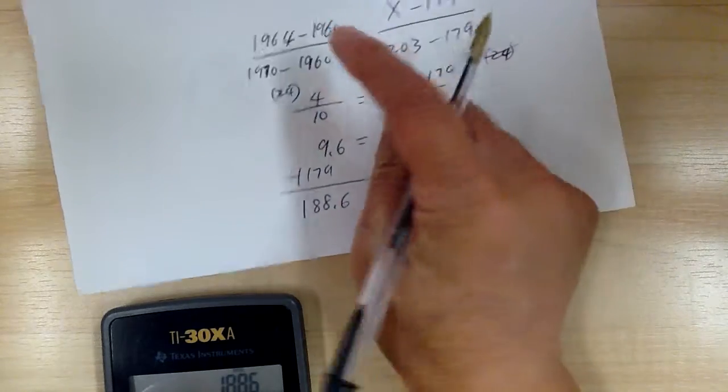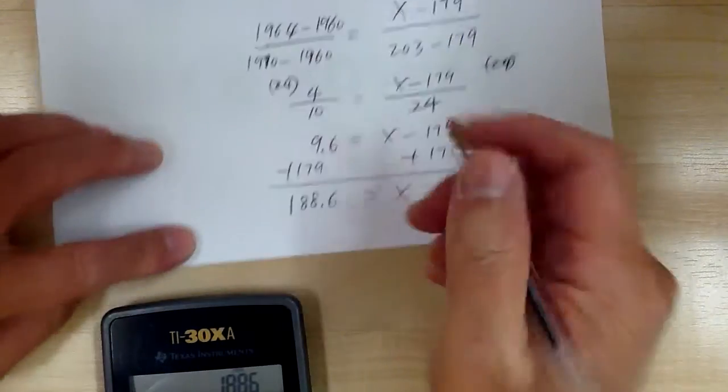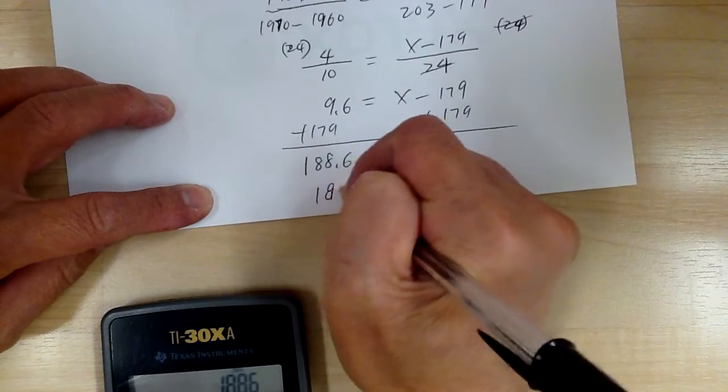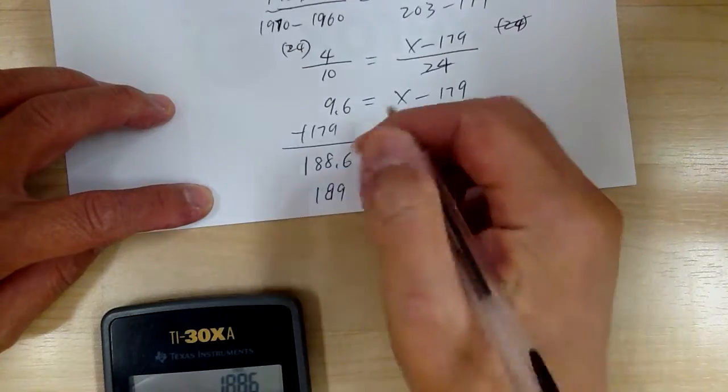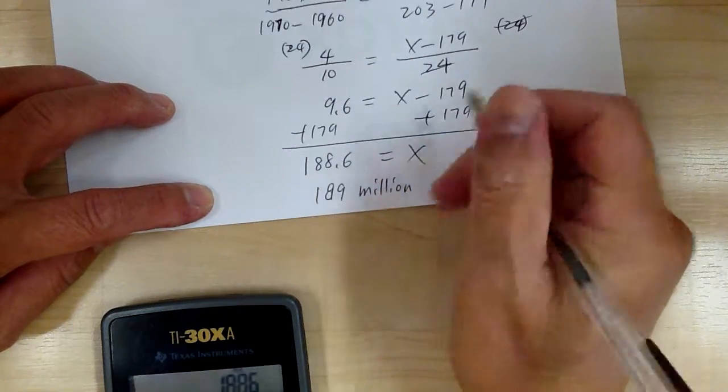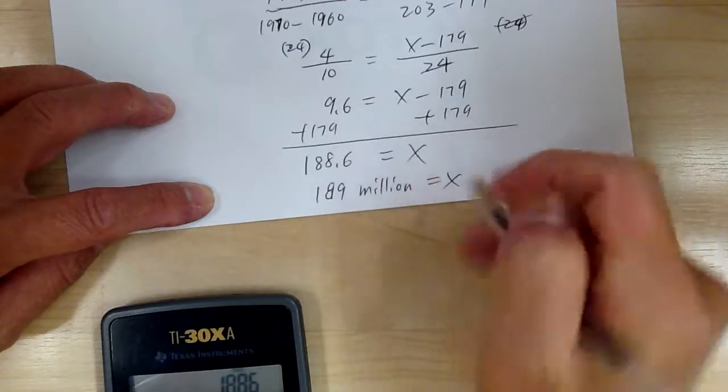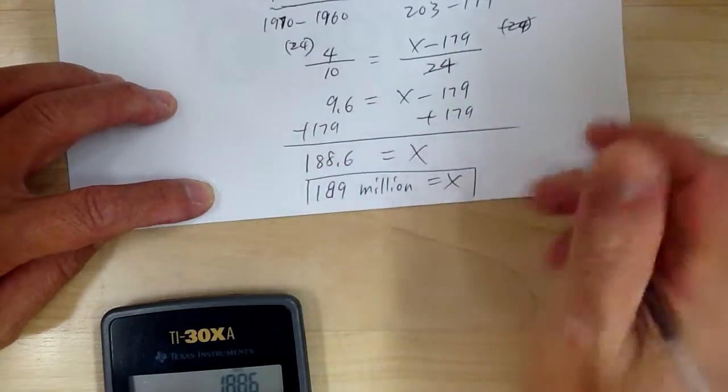Now, because the answers are in whole numbers, so you can just round it off to 189 million. Now, don't just put down 189. Remember this is in millions, right? So make sure you include the million. Don't just put down 189, that would be incorrect. So just be careful with that.